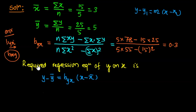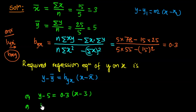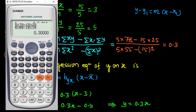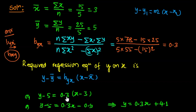Put the values: y mean is 5, b_yx is 0.3, x mean is 3. So y minus 5 equals 0.3 times bracket x minus 3. Multiply: y minus 5 equals 0.3x minus 0.9. Rearranging, 5 minus 0.9 equals 4.1. So the regression equation is y equals 0.3x plus 4.1.